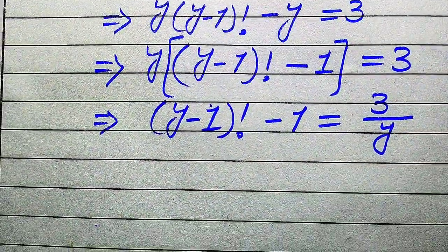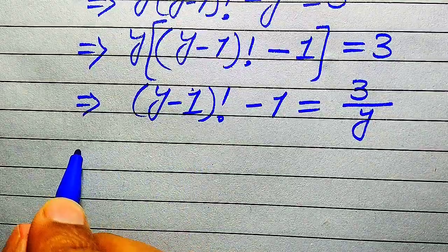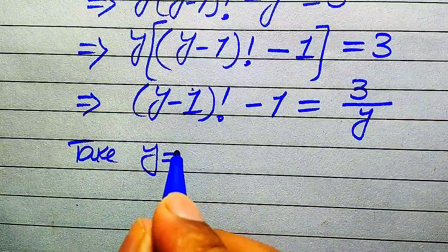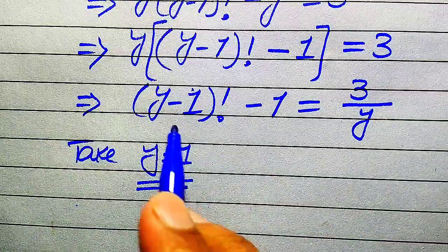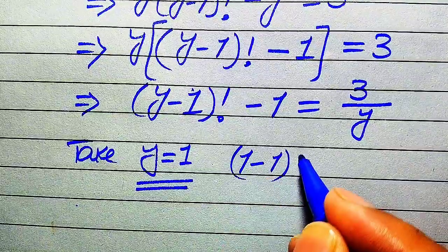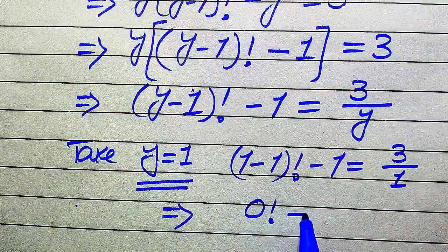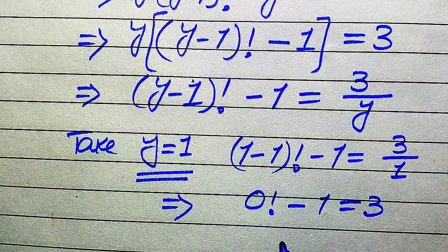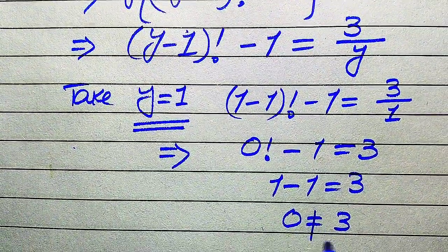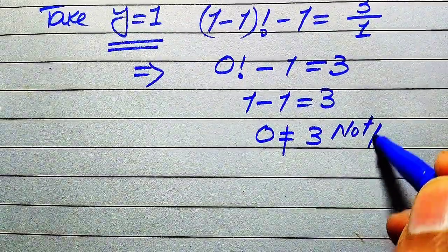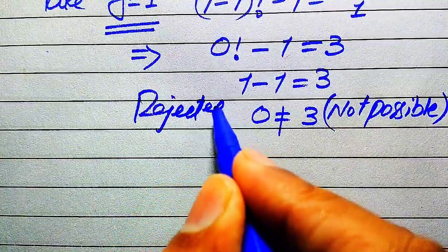Now we test values of y by inspection. First, we try y equals 1. Substituting into (y minus 1) factorial minus 1 equals 3 divided by y gives 0 factorial minus 1 equals 3 divided by 1. Since 0 factorial equals 1, this gives 1 minus 1 equals 3, which means 0 equals 3. This is not possible, so we reject y equals 1.